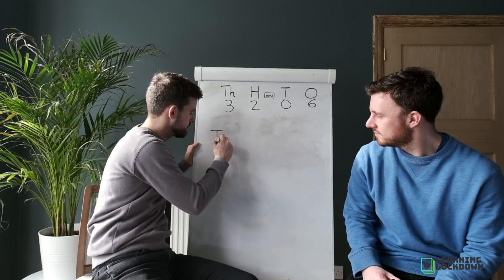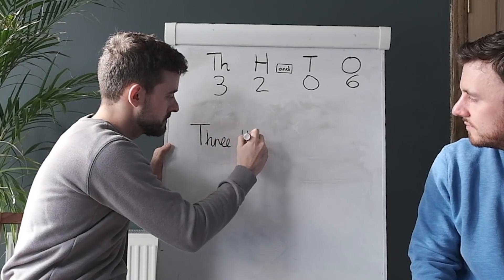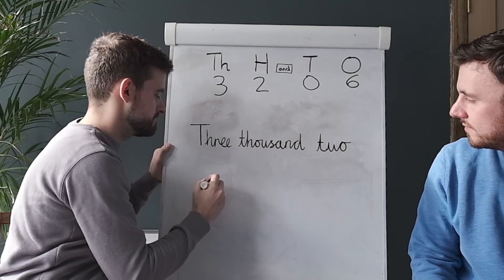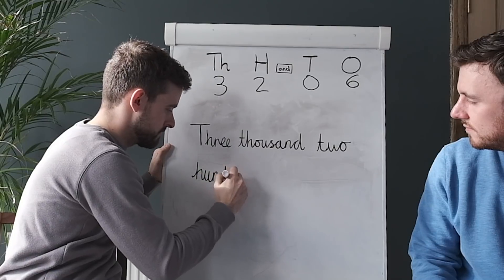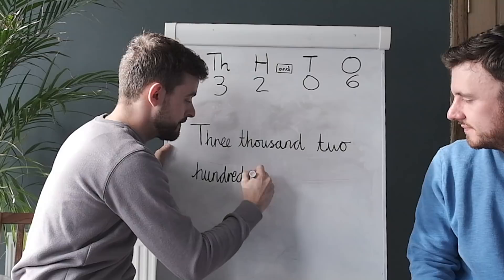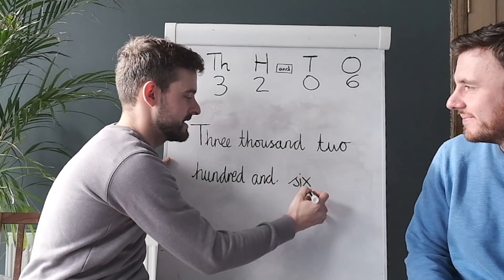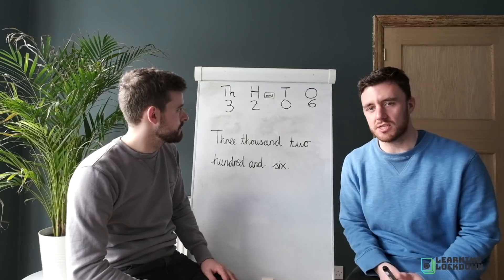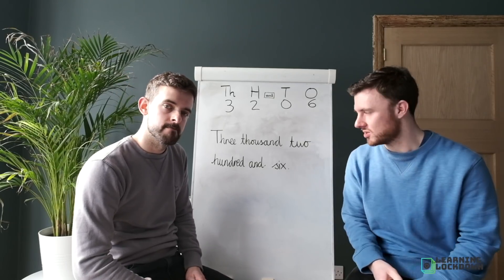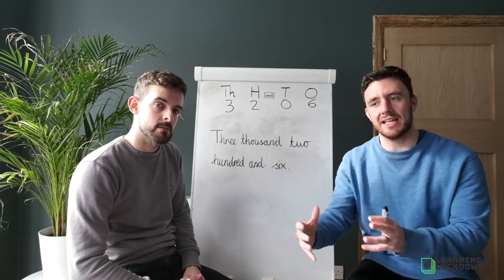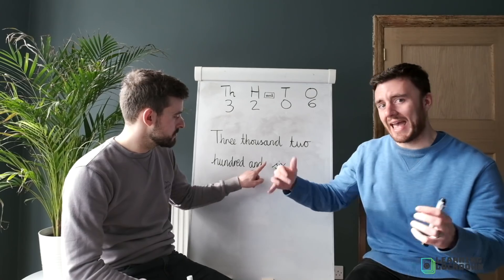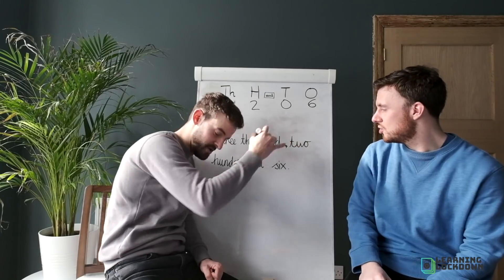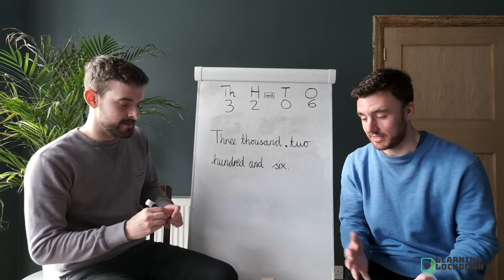Capital letters are still important. Writing three thousand, two hundred and six in words: Three — capital T — thousand, two hundred, and six — then put a full stop at the end. One more thing: when reading these numbers it's like reading a list. We have 'three thousand,' 'two hundred,' and 'six.' We have the 'and,' but we also need a comma after 'three thousand.' So it reads: Three thousand, two hundred and six.